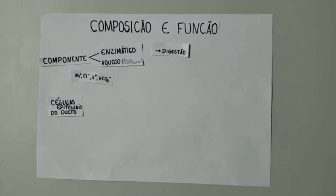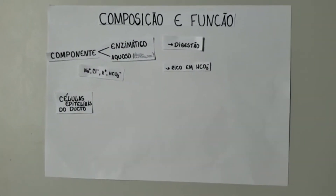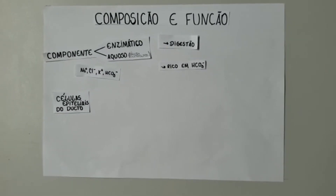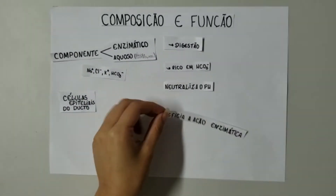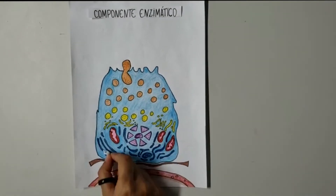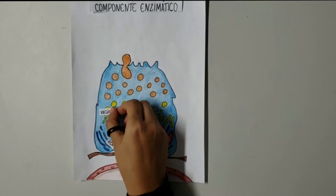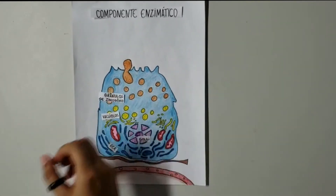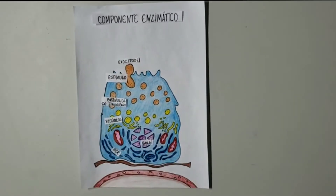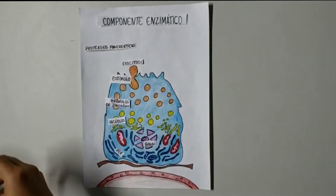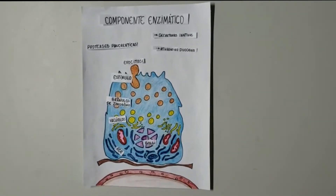As células epiteliais que revestem os ductos pancreáticos secretam íons, especialmente o bicarbonato. A principal função do bicarbonato é tornar o suco pancreático alcalino, neutralizando o pH e proporcionando um ambiente ideal para a ação enzimática. As enzimas são secretadas no retículo endoplasmático rugoso das células acinares, processadas para o complexo de Golgi e então condensadas e concentradas em grânulos de zimogênio, onde ficam armazenadas até que o estímulo desencadeia sua secreção. Assim como a pepsina no estômago, as proteases pancreáticas são produzidas e liberadas em formas inativas e são ativadas no duodeno, o que evita a autodigestão do pâncreas.